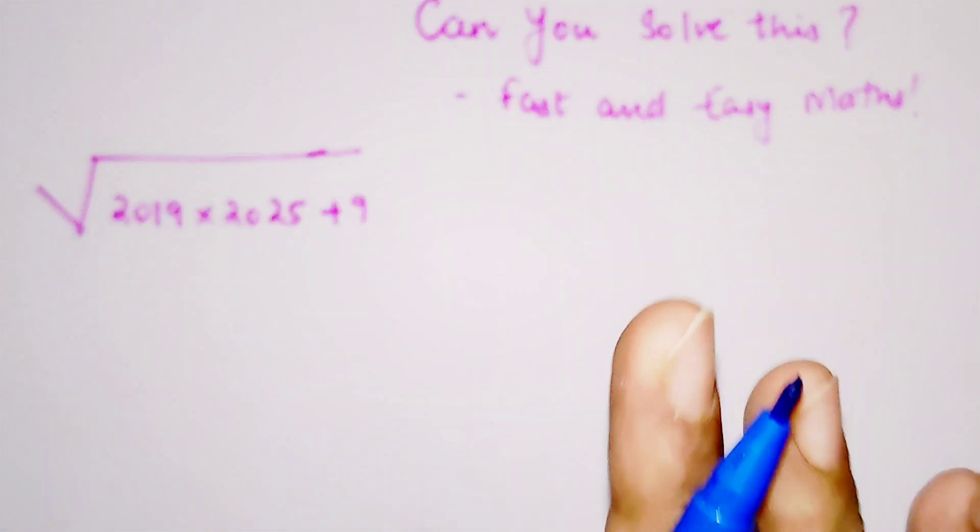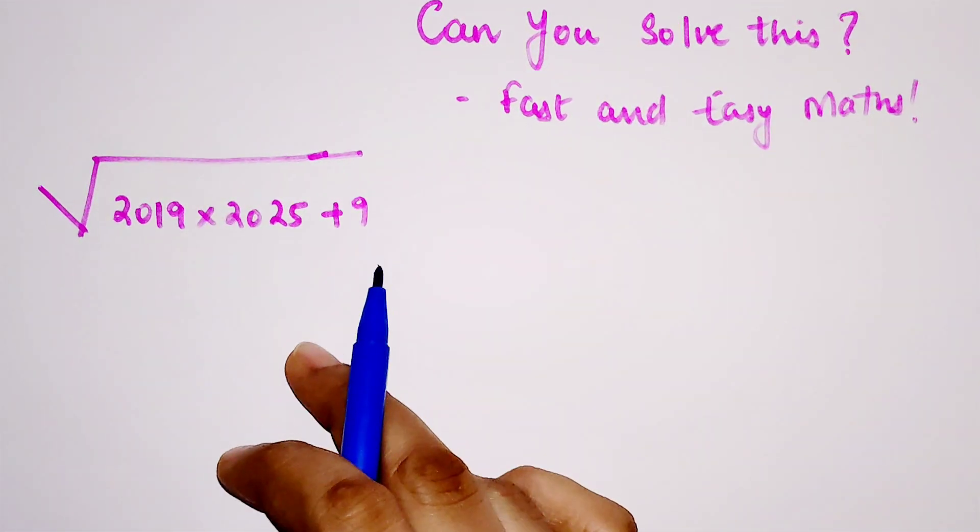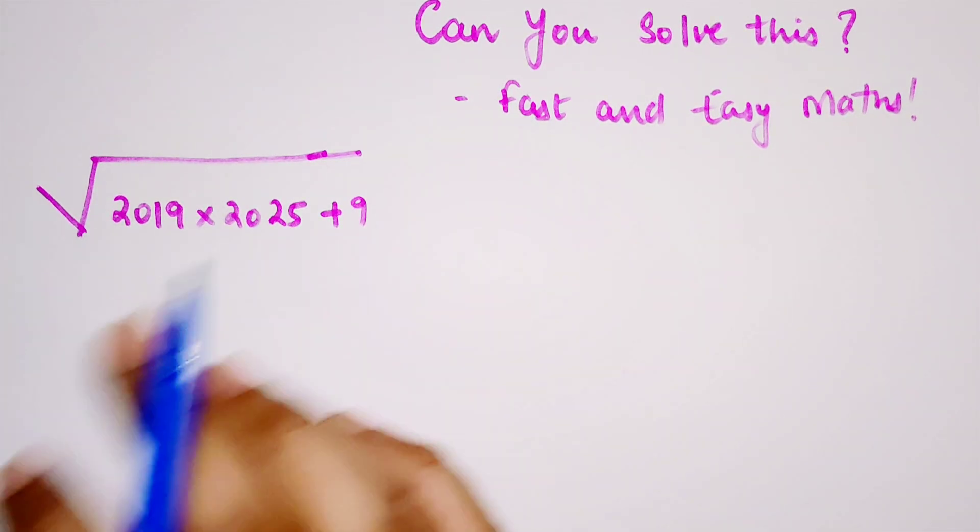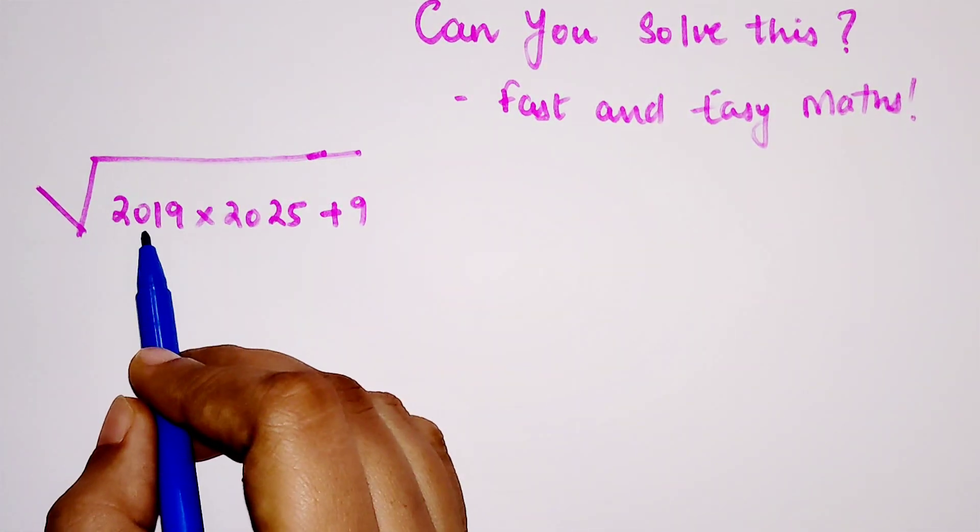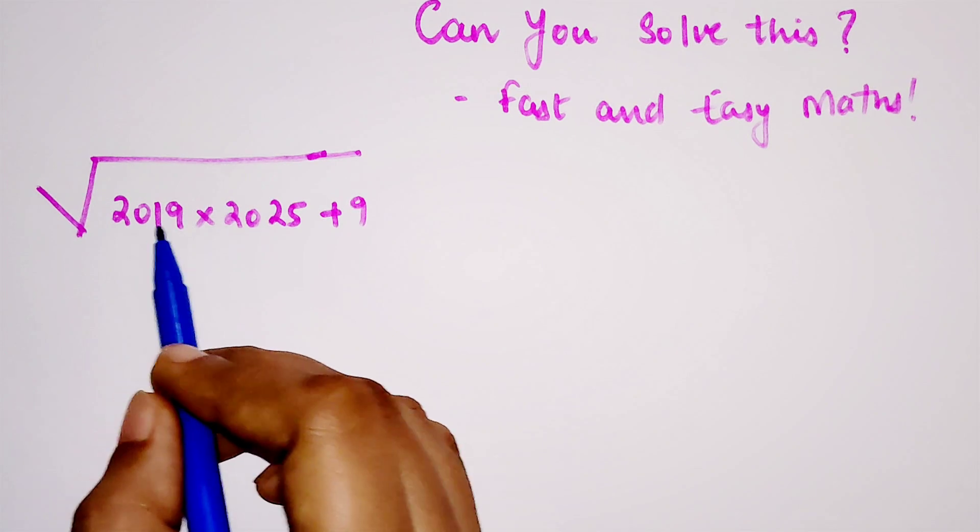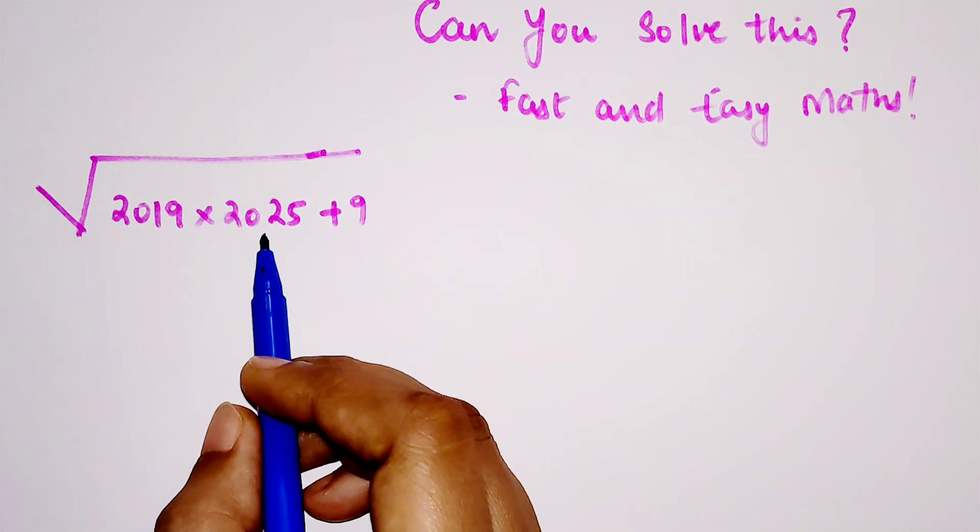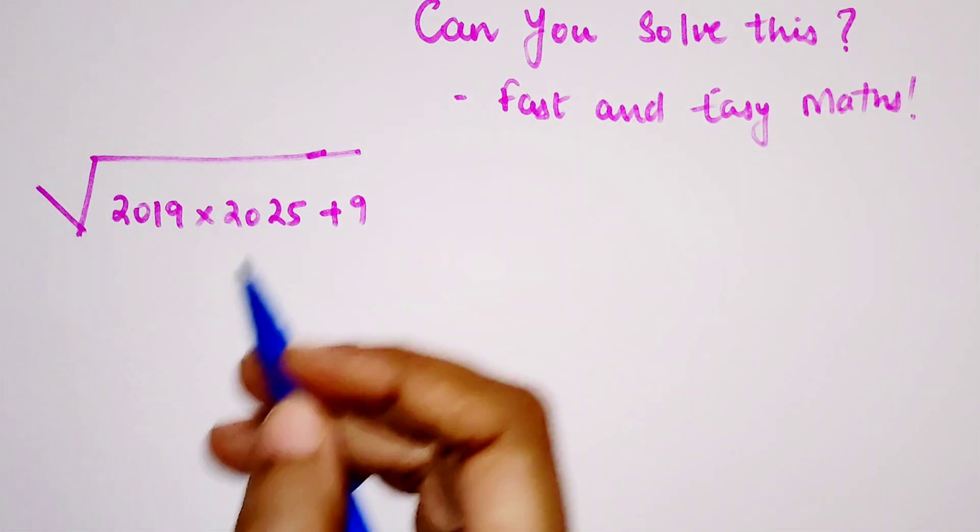Instead of actually multiplying and then adding, all we have to do is find the difference between 2019 and 2025. I can say 2025 is six ahead of 2019, correct?